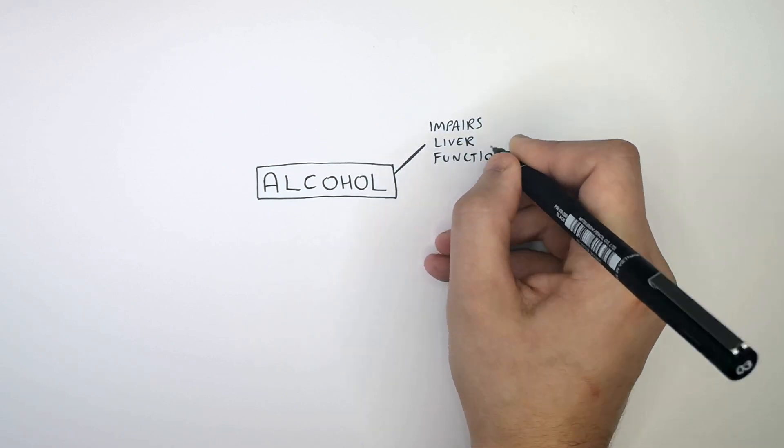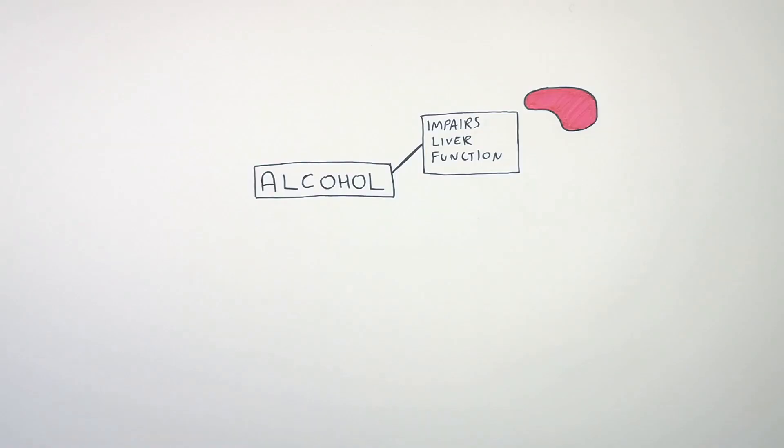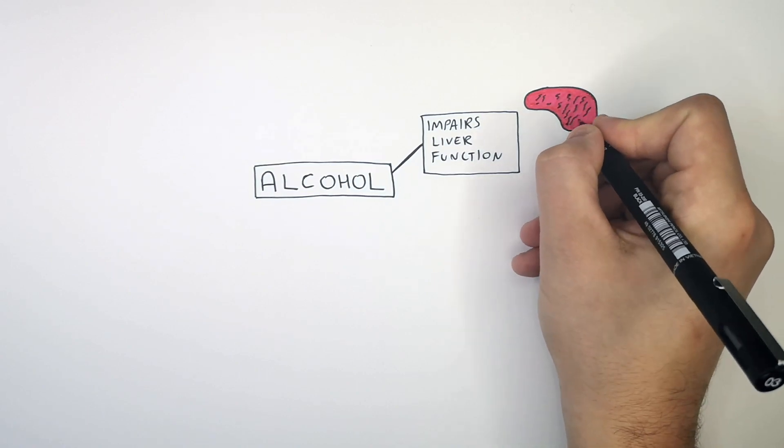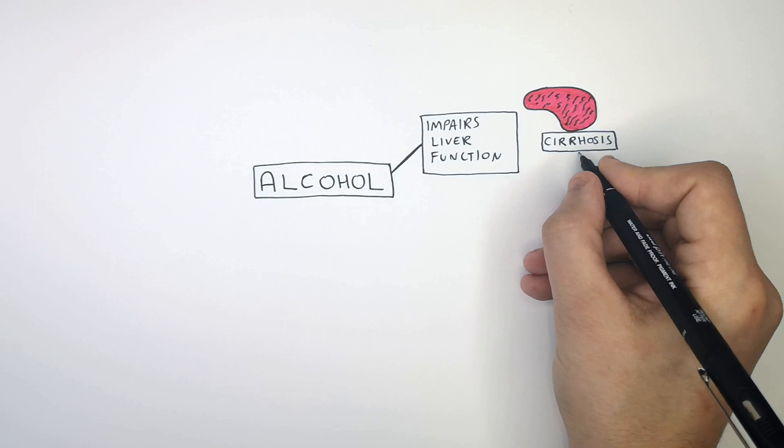Alcohol impairs your liver function. That means it makes your liver less effective. In severe cases, it can cause scarring of the liver, which is called cirrhosis. Cirrhosis of the liver is a disease caused by excessive drinking of alcohol.